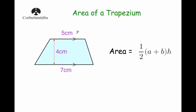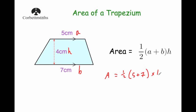Let's label the sides: a and b are the two parallel sides, and the height is the distance between them, which is four. So a is five, b is seven, and h is four. Using the formula: area equals one half times the two parallel sides added together, so that's five plus seven, then multiplied by h which is four. Using BODMAS, we work out five plus seven first, which is twelve, then still multiplying by four and halving.